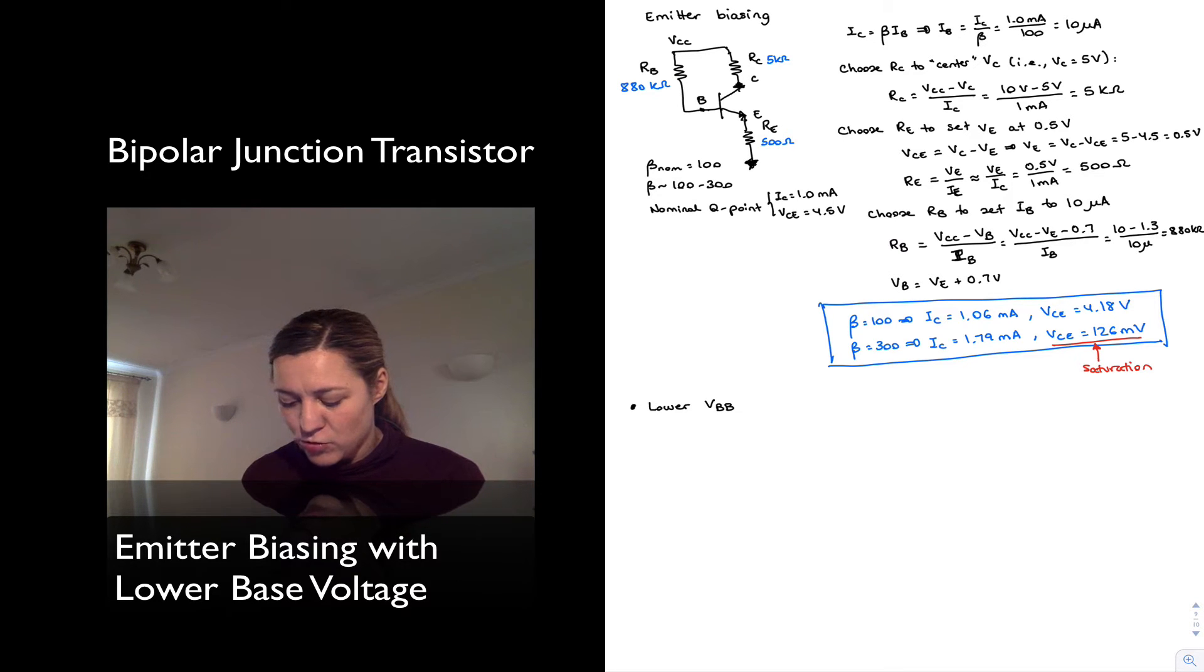So I'm going to lower Vbb, to keep it consistent with the activities, to 2 volts. Let me redraw the circuit with this new condition.